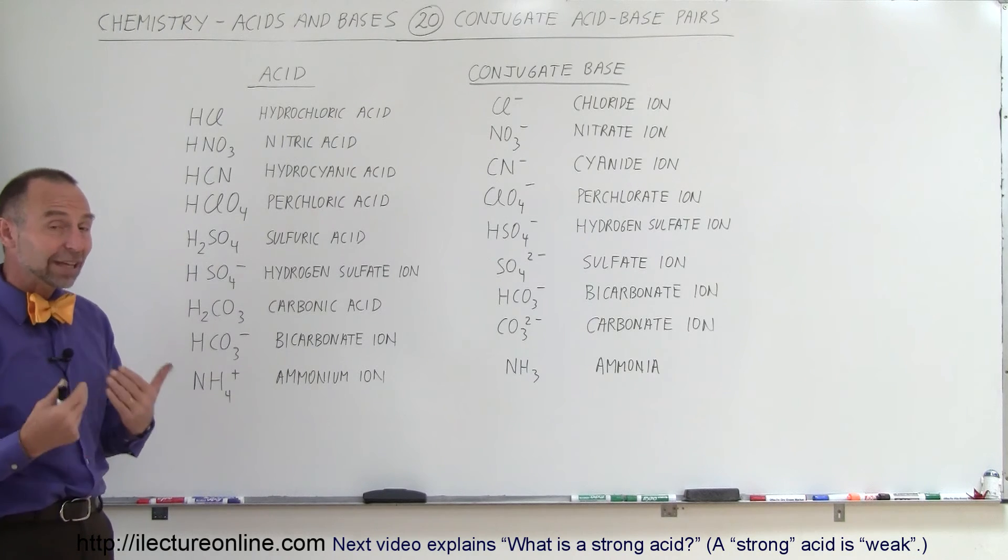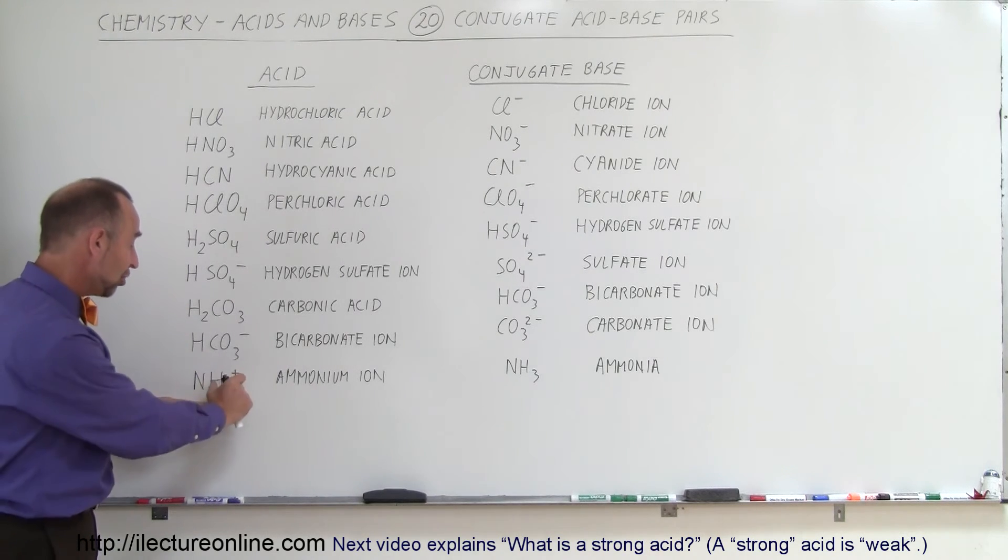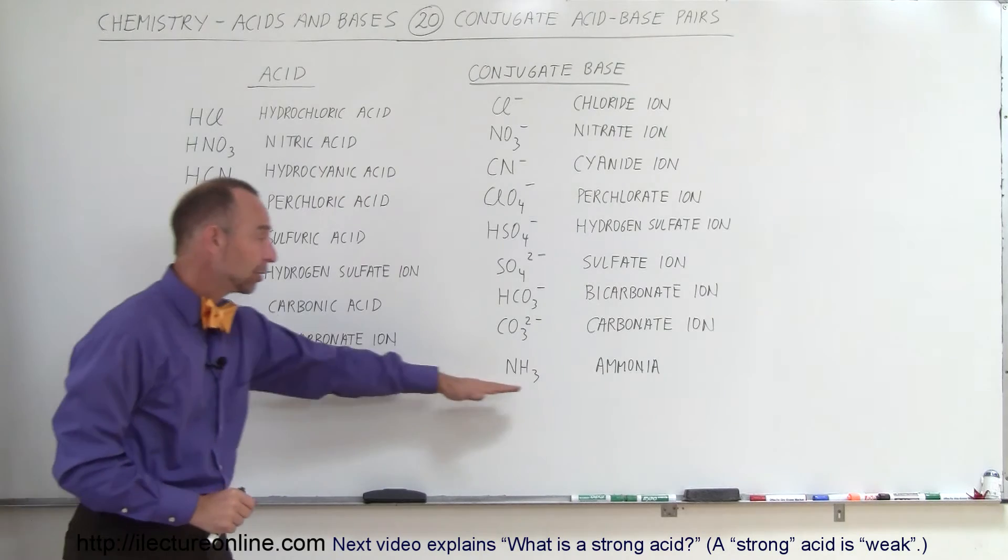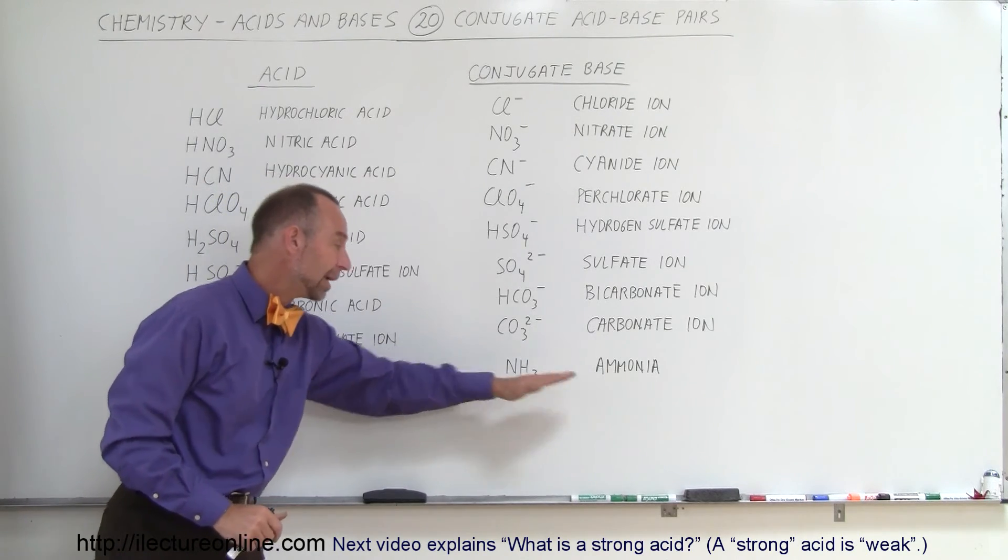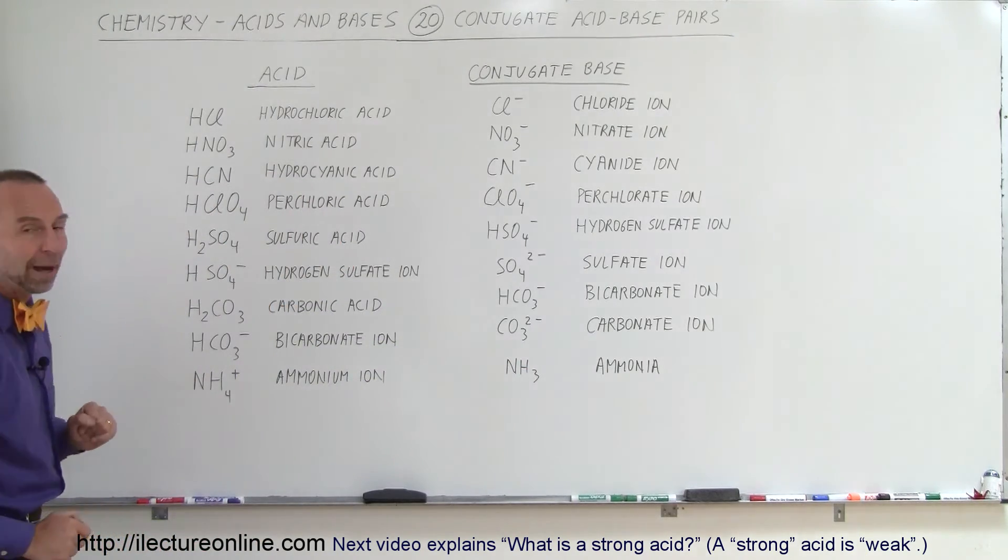And finally, we have the ammonium ion, which is an acid because it can shed a hydrogen ion and turn itself back into ammonia. So ammonia is the conjugate base of the acid ammonium ion.